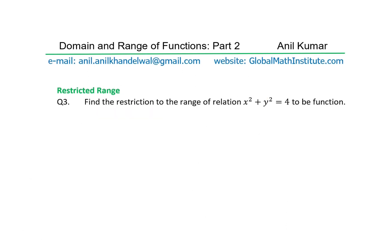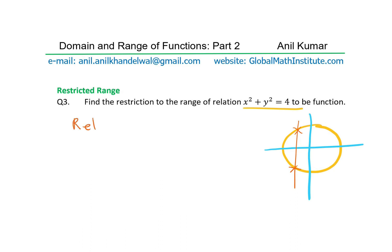Question 3: find the restriction to the range of the relation x² + y² = 4 to make it a function. We are given a relation and want to make it a function. x² + y² = 4 is basically a circle. A circle is not a function — it is a relation but not a function, simply because for any value in between, we have two values of y, so it fails the vertical line test.